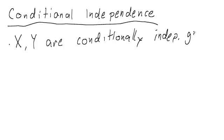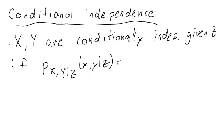Given the third random variable Z, if we can write the conditional distribution for both of them as the product of the individual conditionals. So we can write P_{X,Y|Z} as P_{X|Z} times P_{Y|Z}.